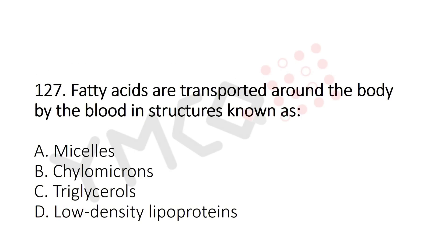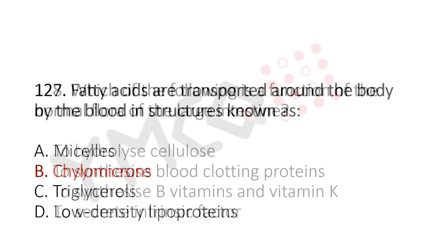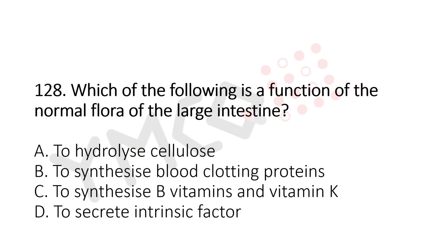Now Question 127: Fatty acids are transported around the body by blood structures known as — Option A: micelles, Option B: chylomicrons, Option C: triglycerol, Option D: low-density lipoproteins. The answer is Option B: chylomicrons.